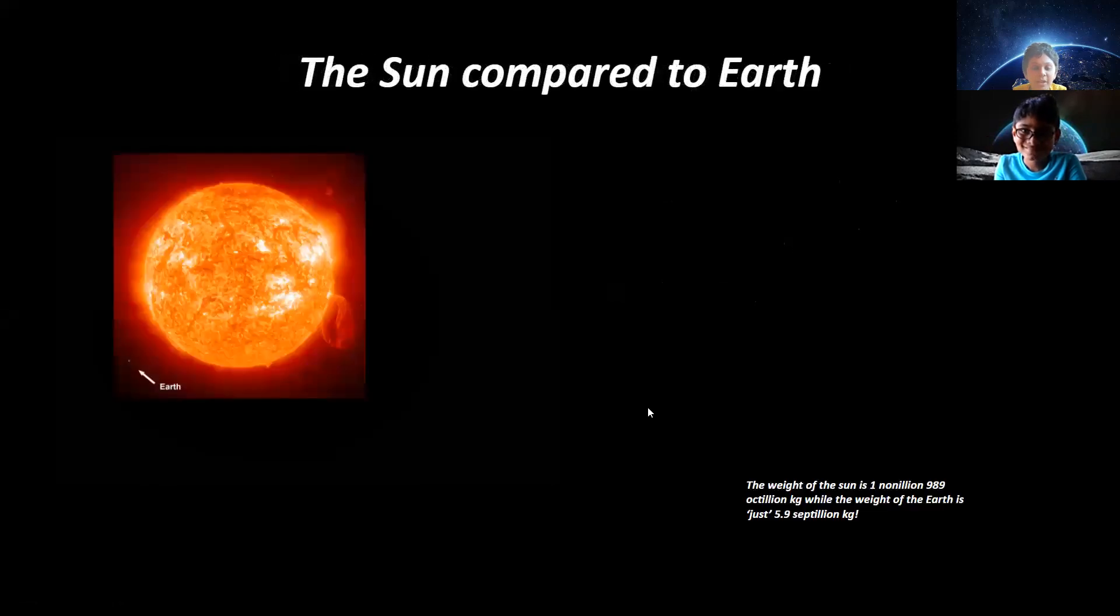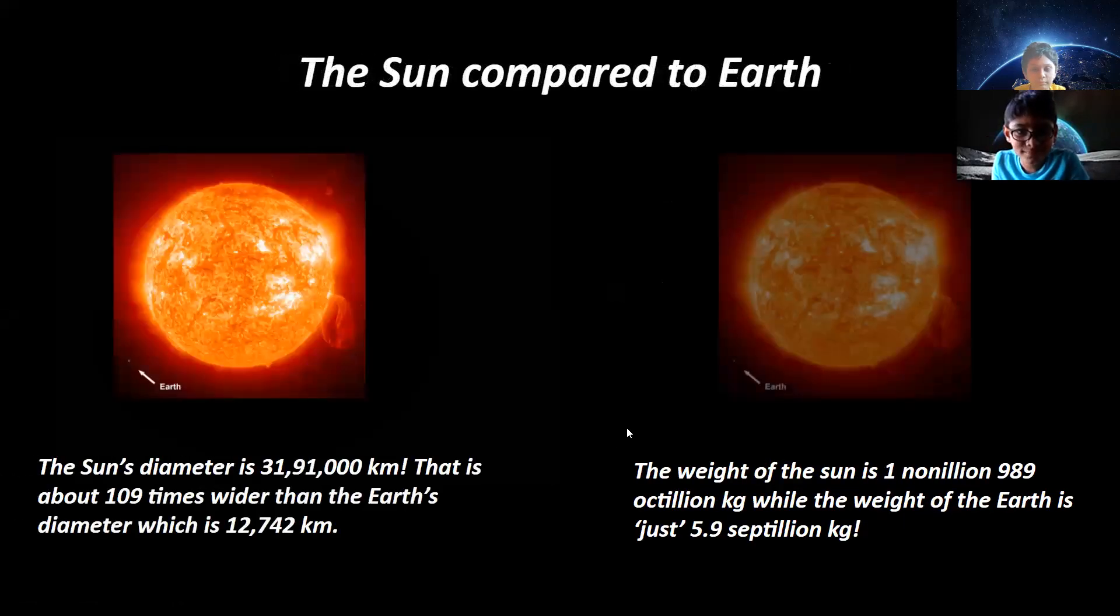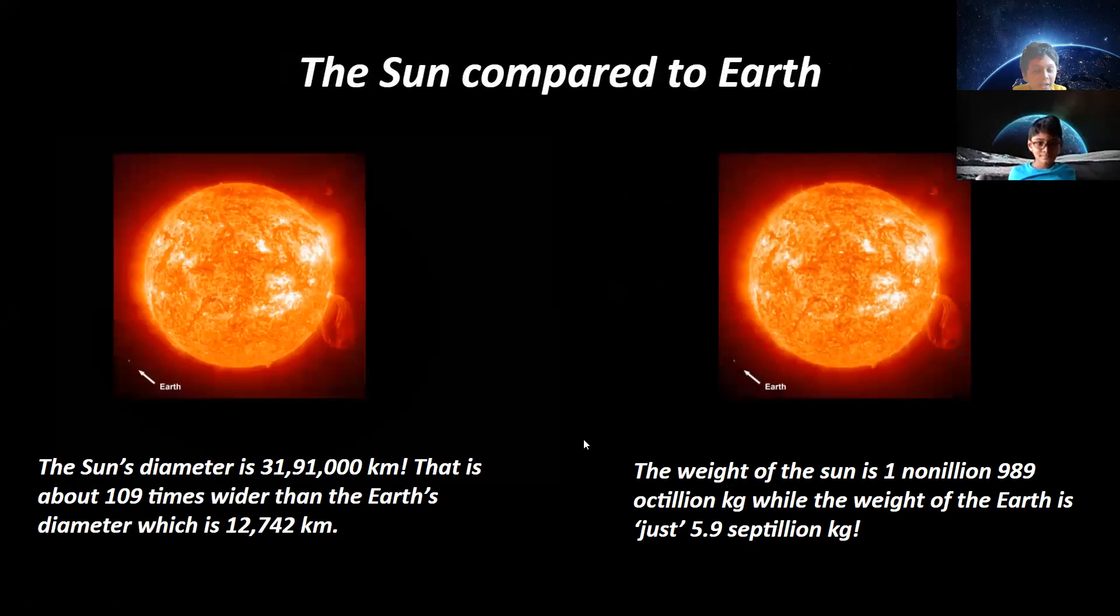The sun compared to Earth. The sun's diameter is 31,091,000 kilometers. That is about 109 times wider than the Earth's diameter which is 12,742 kilometers.